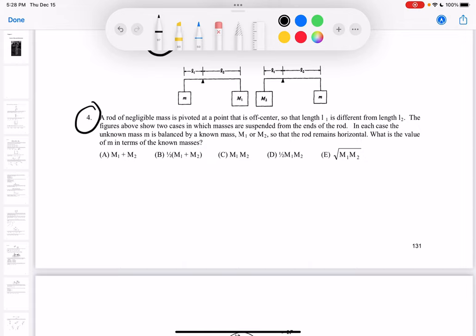So it says a rod of negligible mass is pivoted at a point that is off-center, so that length L1 is different from L2. The figures above show two cases in which the masses are suspended from ends of the rod. In each case, the unknown mass m is balanced by a known mass m1 or m2, so that the rod remains horizontal. What is the value of m in terms of the known masses?